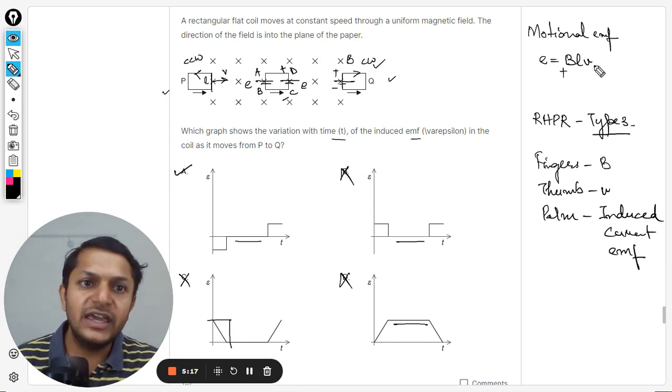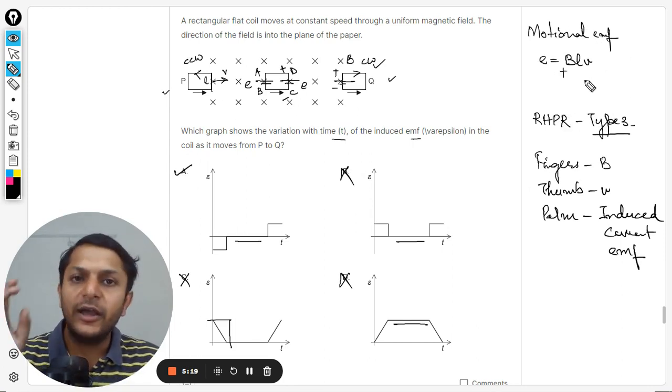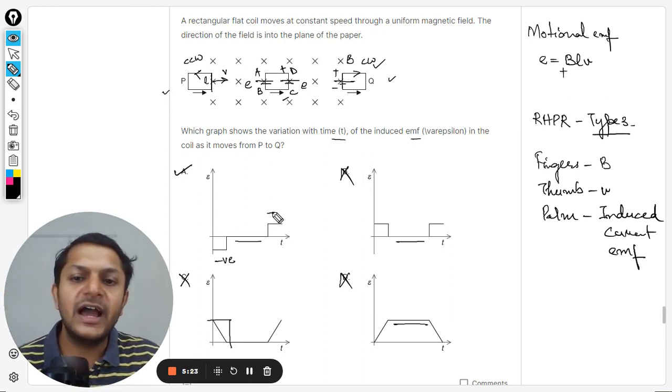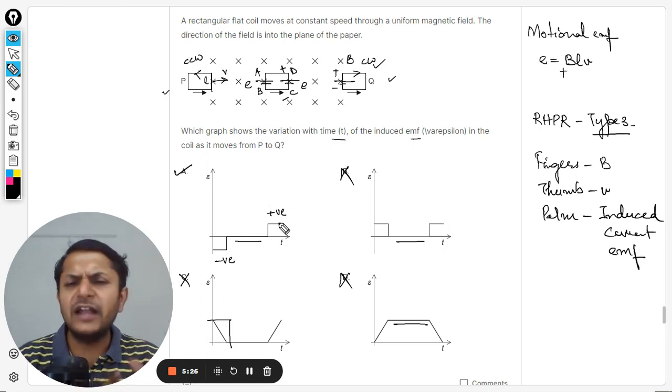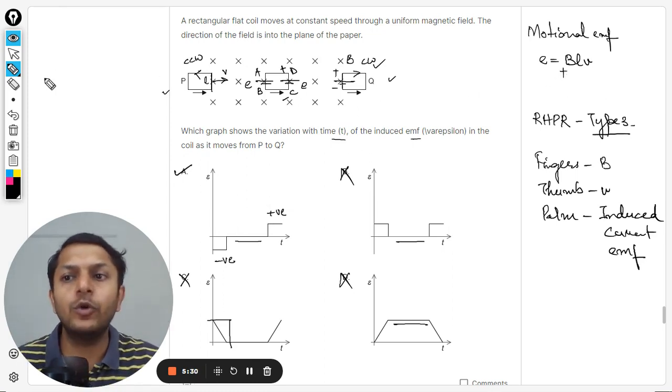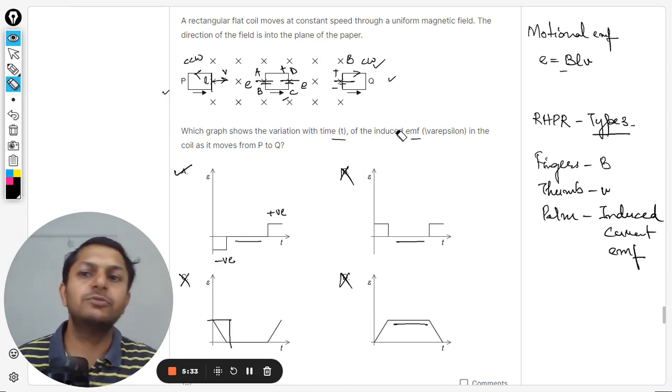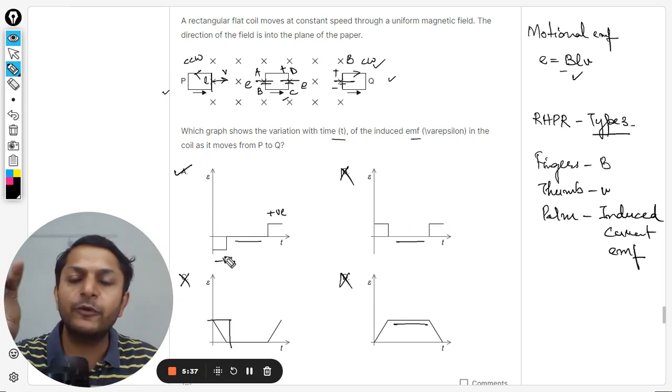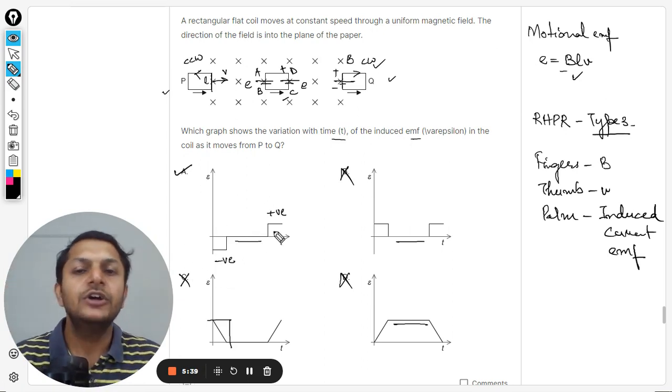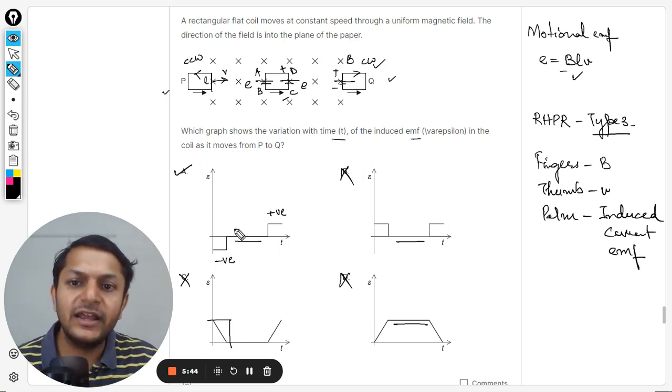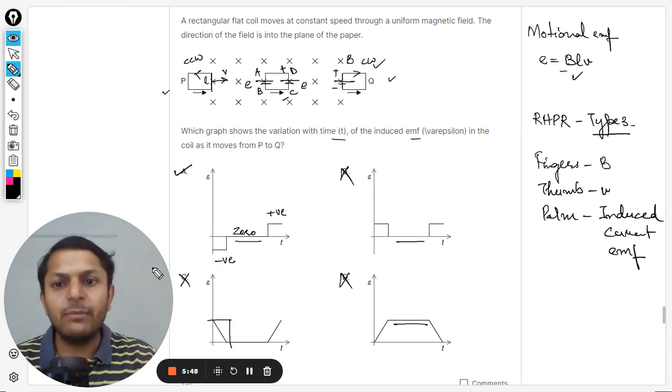Here we just assumed EMF to be positive in initial case, but it is taken to be negative here and positive later. That depends just on our sign conventions whether you want to take it as positive or negative. So let us say this is the negative. Earlier the EMF produced is taken negative, and now the EMF produced when it is getting out of the magnetic field, that is taken positive, and meanwhile it is zero. This is how the EMF is produced in this question.